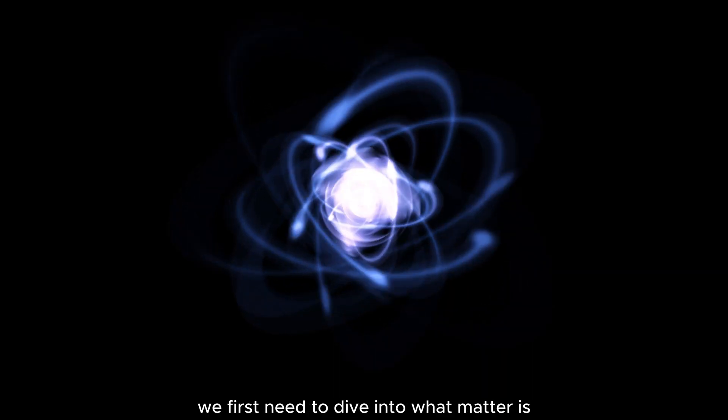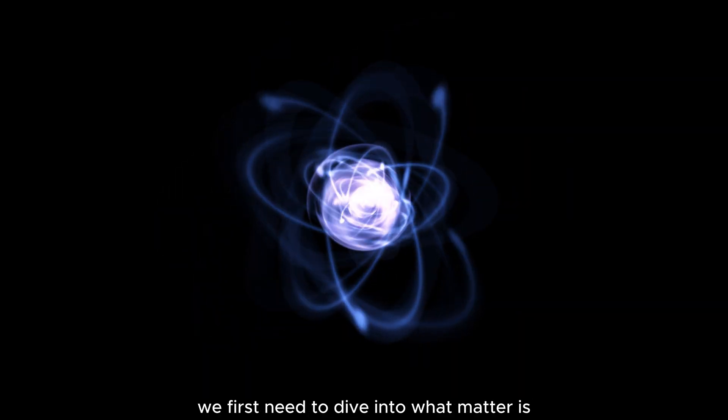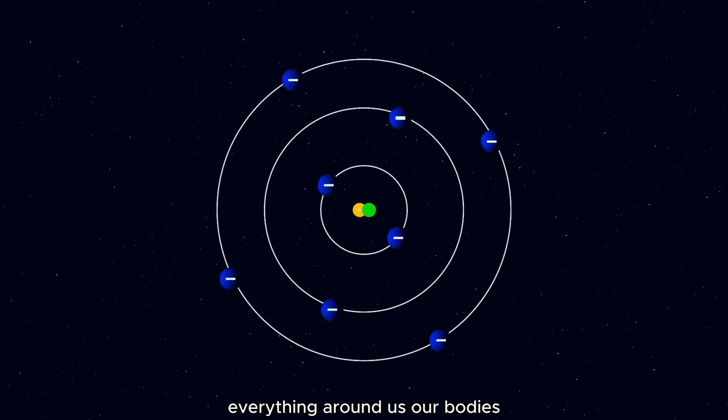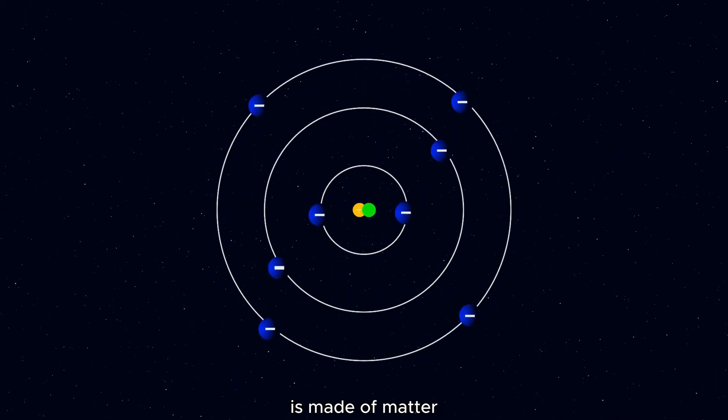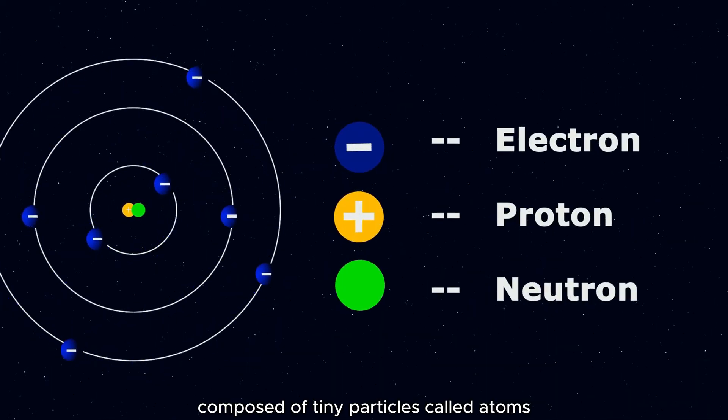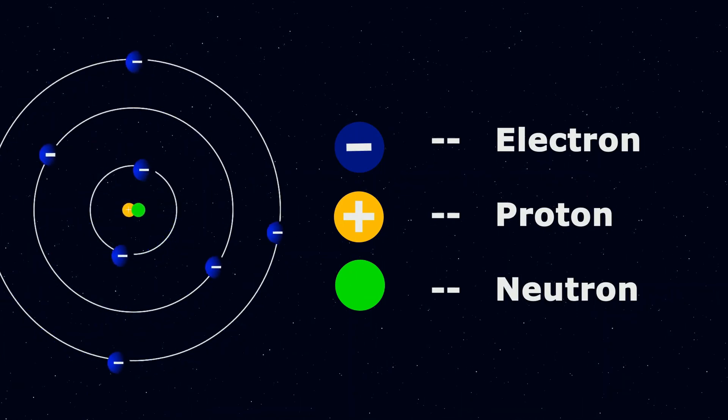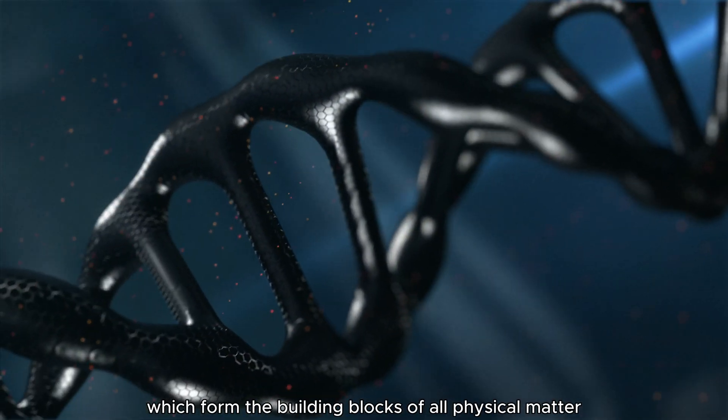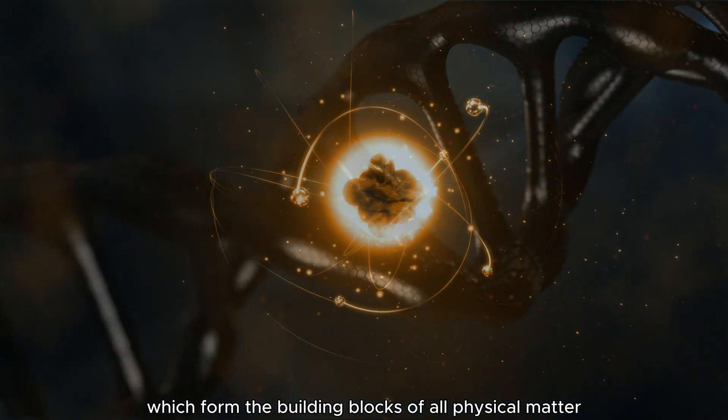To understand antimatter, we first need to dive into what matter is. Everything around us—our bodies, the earth, the stars—is made of matter, composed of tiny particles called atoms. These atoms have protons, neutrons, and electrons, which form the building blocks of all physical matter.